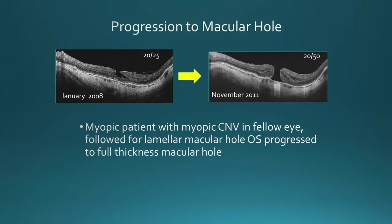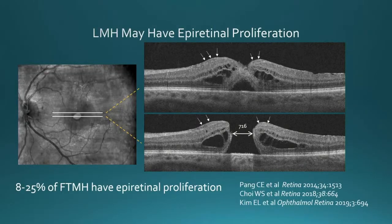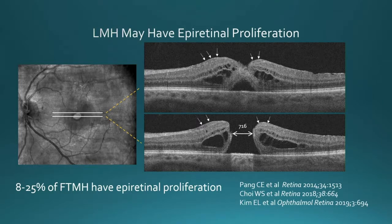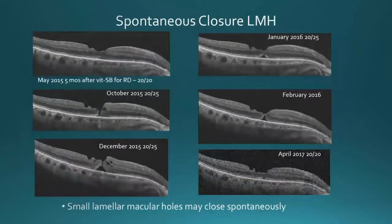This is a patient I followed for three years whose fellow eye had a myopic CNV, and this eye developed a full thickness macular hole even though there was a full PVD present. Here's another patient with a known lamellar macular hole who, within a month, developed a full thickness macular hole measuring 716 microns. The white arrows point to the epiretinal proliferation. This is important to recognize preoperatively because surgery will have to be different — you'll have to remove this epiretinal proliferation prior to peeling the ILM. In various studies, up to 25% of full thickness macular holes have this epiretinal proliferation.